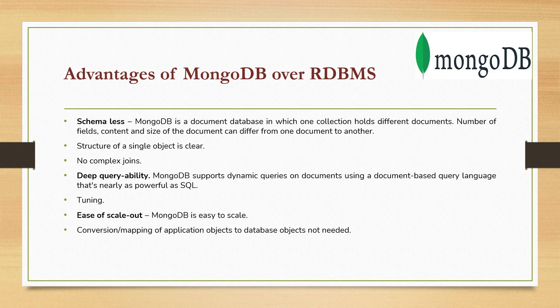When we talk about the conversion or mapping of application objects to the database — in a framework like Hibernate, when you define a Java class and a corresponding database column, you must have a one-to-one mapping for each field. But in MongoDB, you don't need to map your Java objects to JSON objects — that kind of mapping is not required, which is also a good advantage.